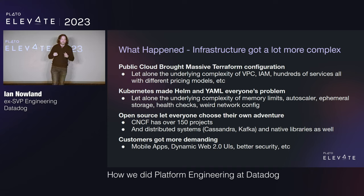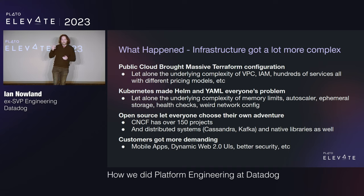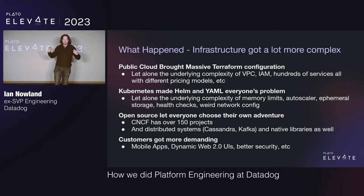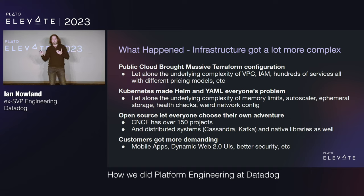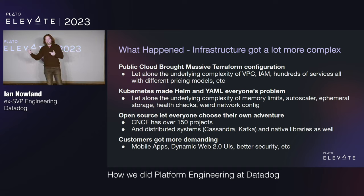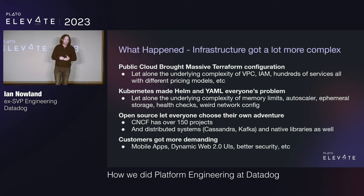There are basically four things that have happened to infrastructure. First, public cloud and IaaS — infrastructure as a service — is just massively complicated. Terraform is a very visible example; you see orgs struggling with massive Terraform files, figuring out what it means to do diffs. But Terraform is actually the least of it — look at the complexity of networking, identity, all the different services with different pricing and magic limits. It's great that we've given developers all this choice, but that's a lot of complexity we're asking them to get right to have things run well in production.